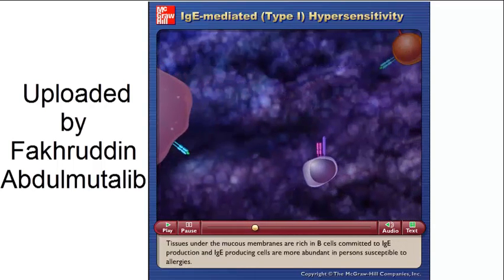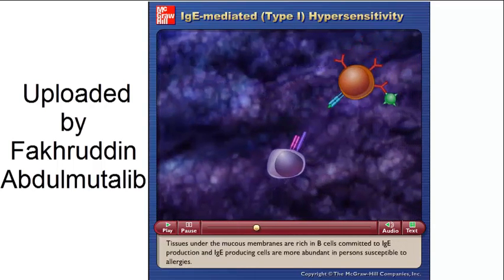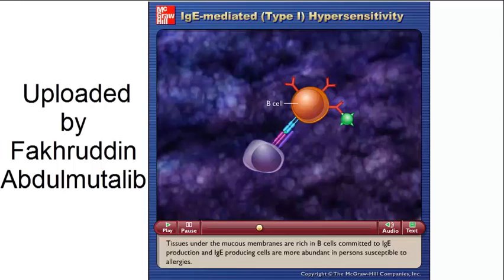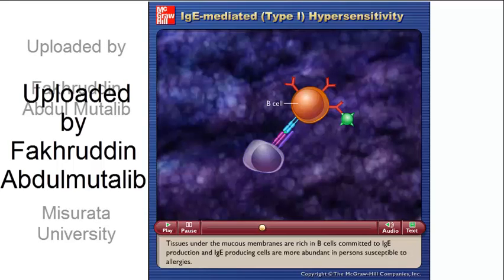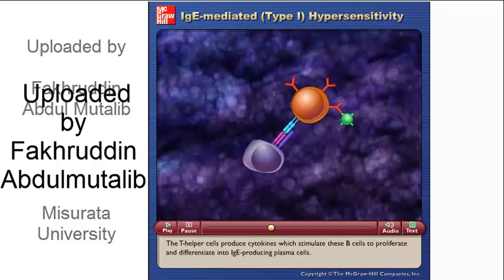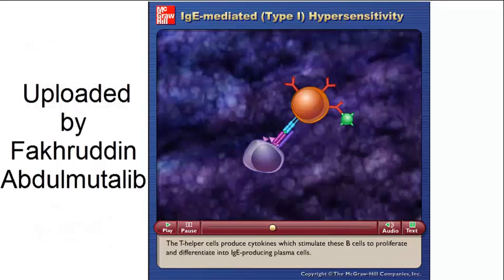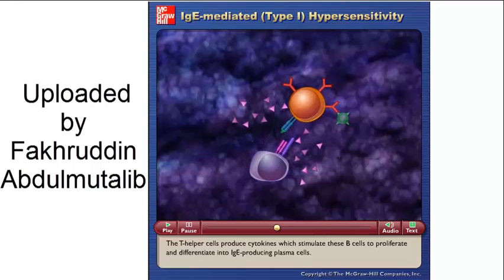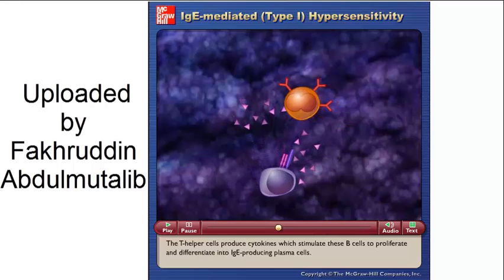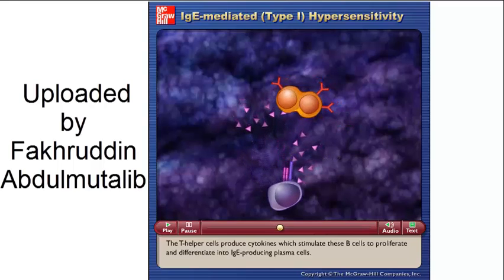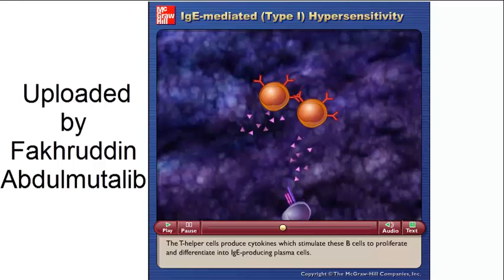Tissues under the mucous membranes are rich in B cells committed to IgE production, and IgE-producing cells are more abundant in persons susceptible to allergies. The T helper cells produce cytokines, which stimulate these B cells to proliferate and differentiate into IgE-producing plasma cells.